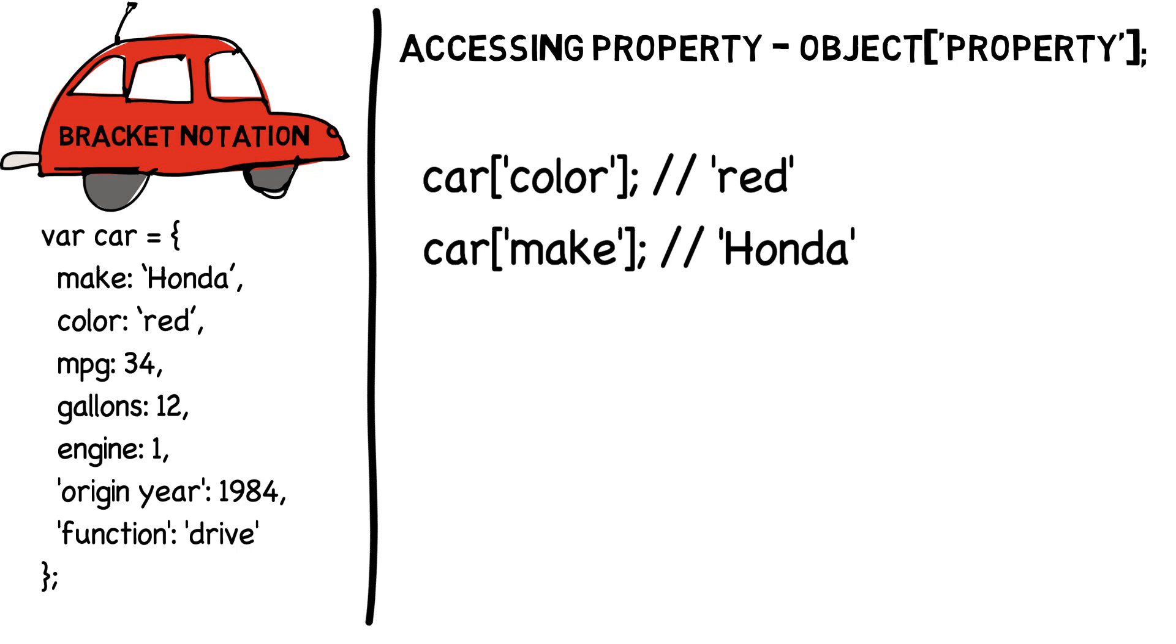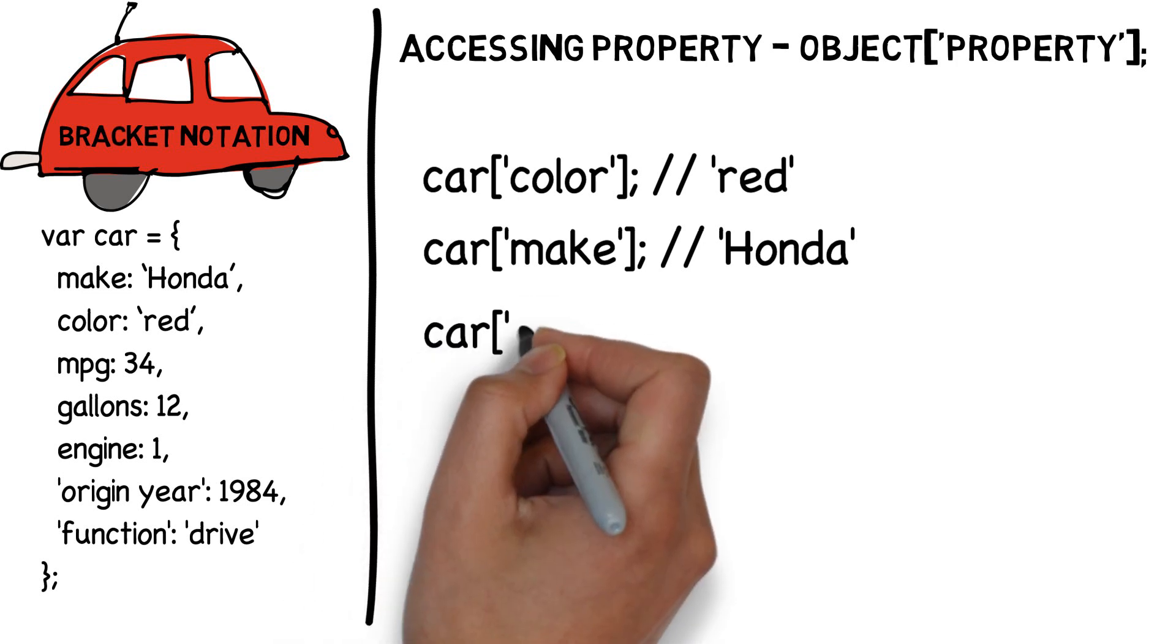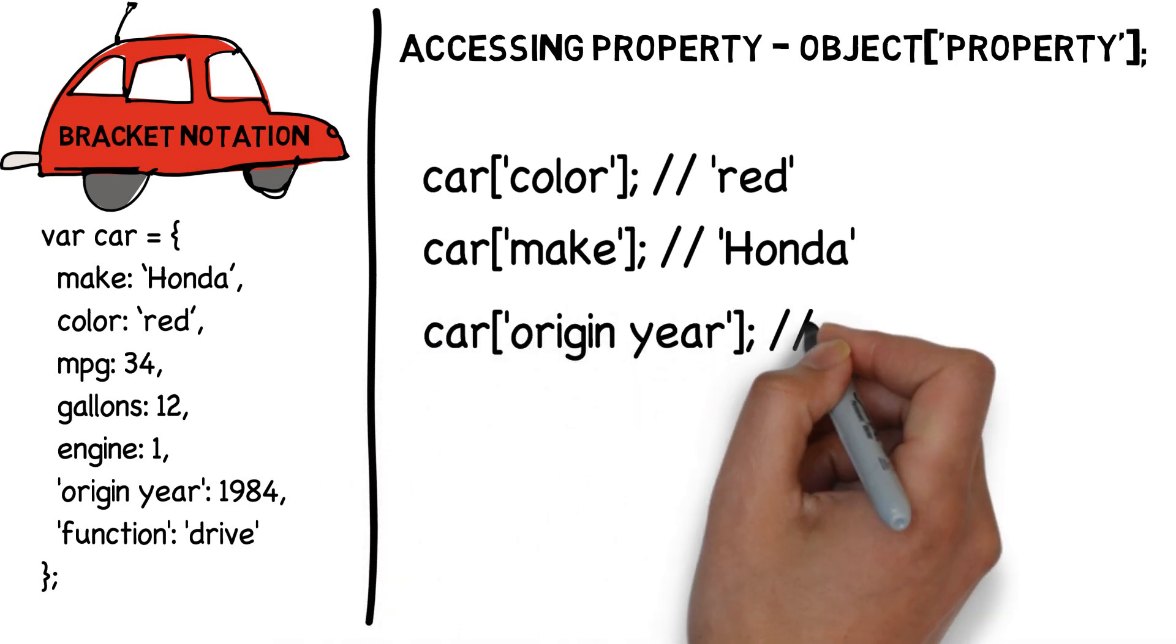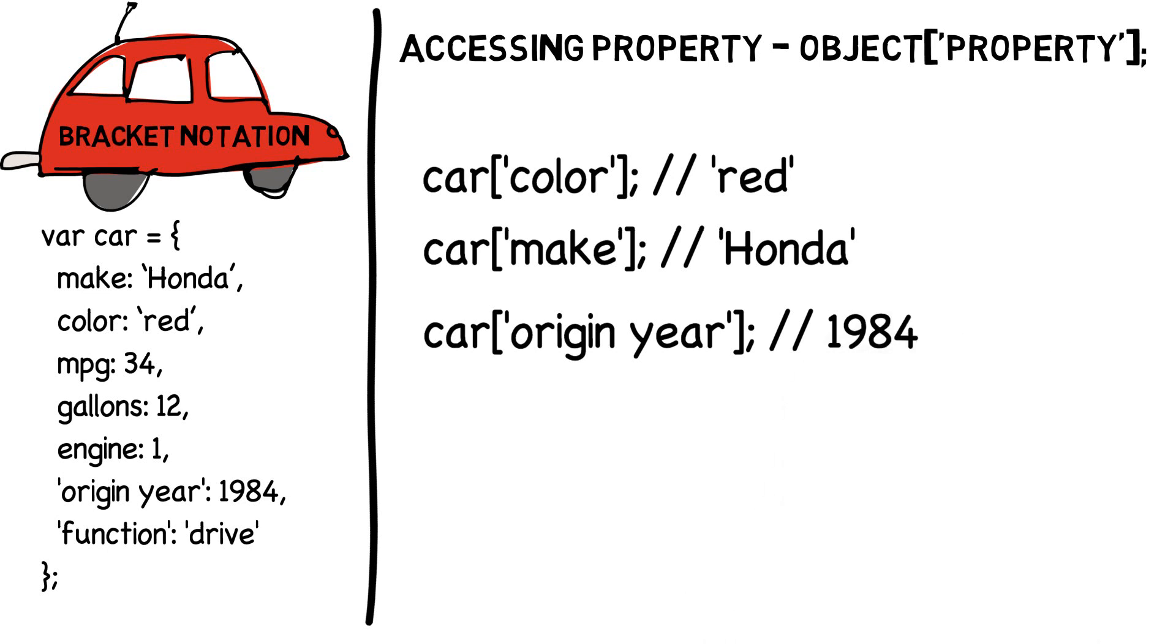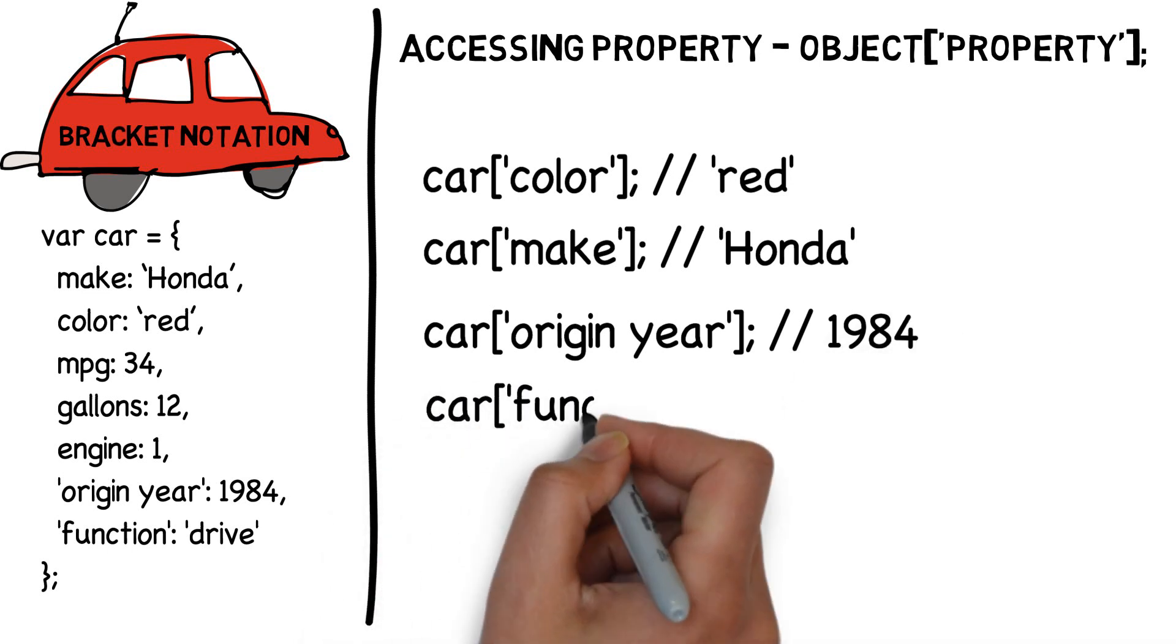Now let's go ahead and see how bracket notation allows us to grab origin year property value and the property value of function. The process is exactly the same. The properties are already within quotes and now we just place them within square brackets and we are all set.